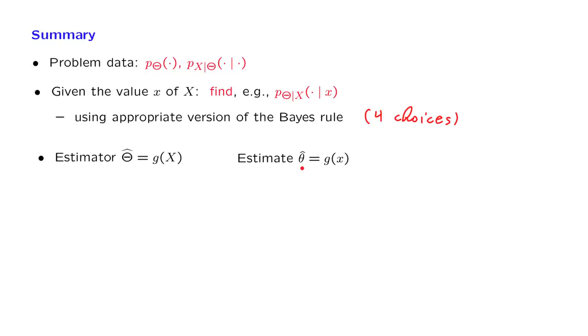We have seen two particular ways of constructing estimates or estimators. One of them is the maximum a posteriori probability rule, in which we choose an estimate that maximizes the posterior distribution.